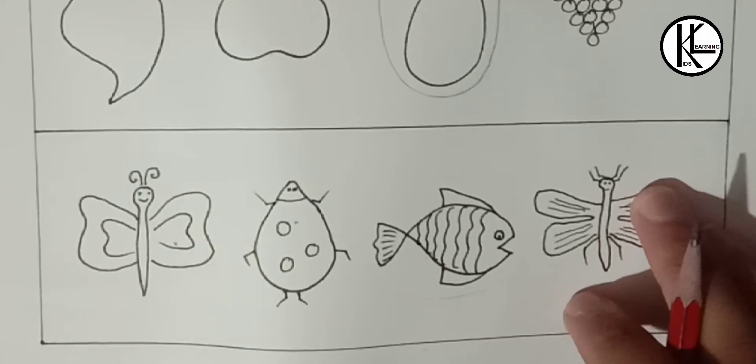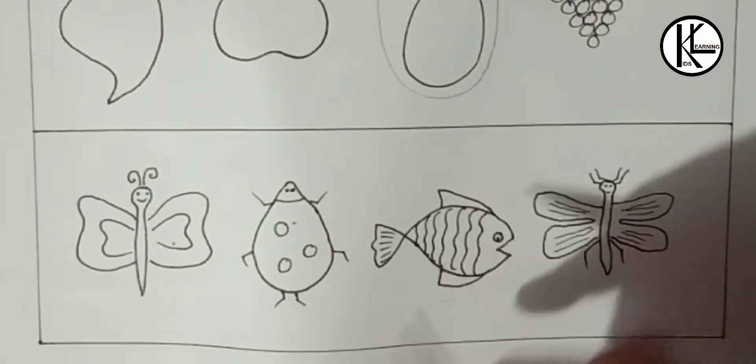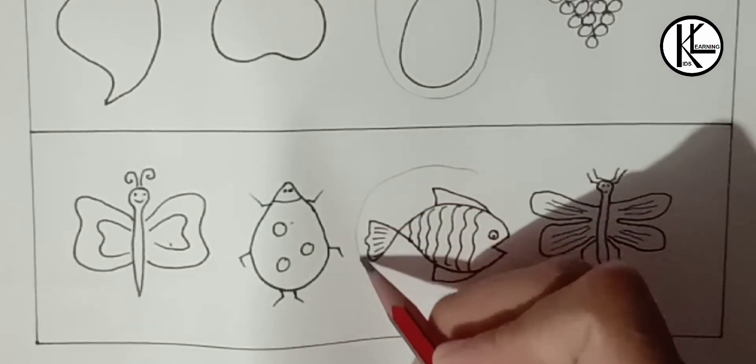And fourth, I have drawn three insects and one sea animal. So this is different from these three. Kids have to circle this.